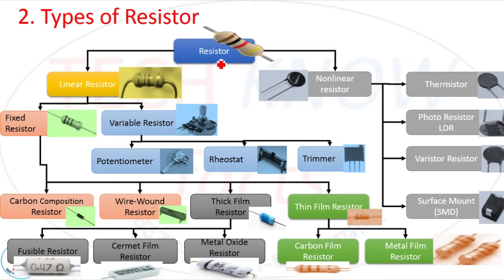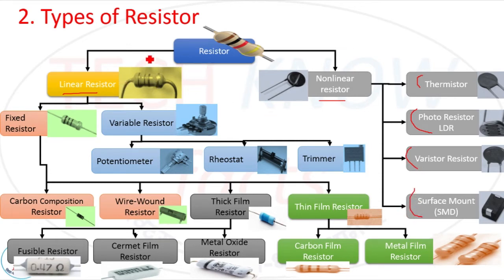Now, types of resistor. Basically resistors have two types: number one is linear resistor and number two is nonlinear resistor. Nonlinear resistors have four basic types: thermistor, photo resistor (LDR), varistor, and surface mount device. Linear resistors have two basic types: fixed resistor and variable resistor.